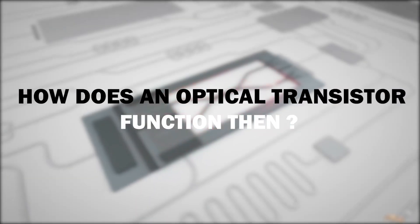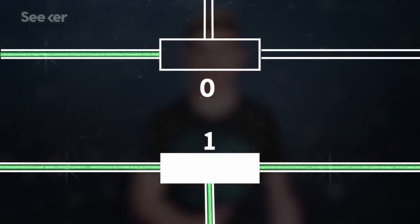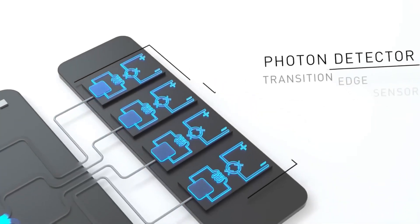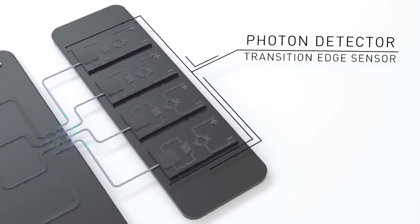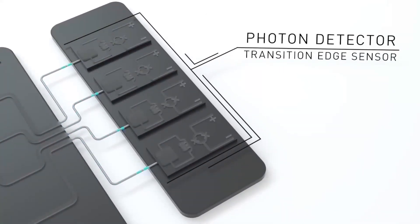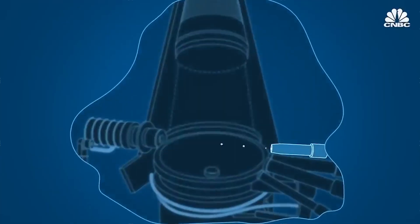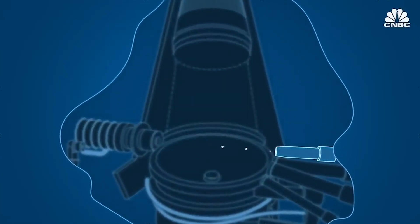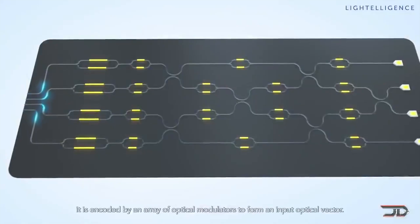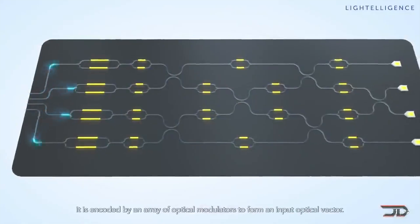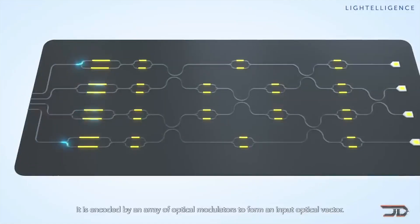How does an optical transistor function, then? The gadget uses two lasers to alternately set its state to zero or one. It just requires a small number of photons in the control beam to switch one stronger laser beam on or off, which is why the gadget is so effective. An incredibly weak laser beam is employed to either turn another brighter laser beam on or off. It only takes a few photons in the control beam, which is why the device is so efficient.